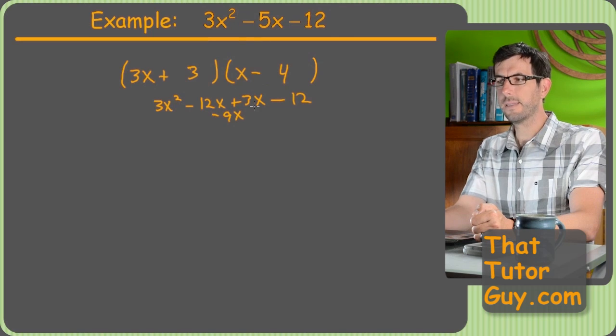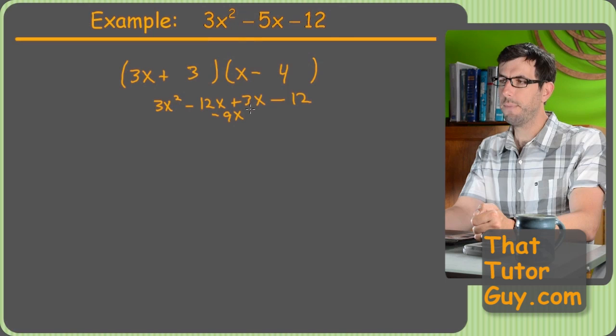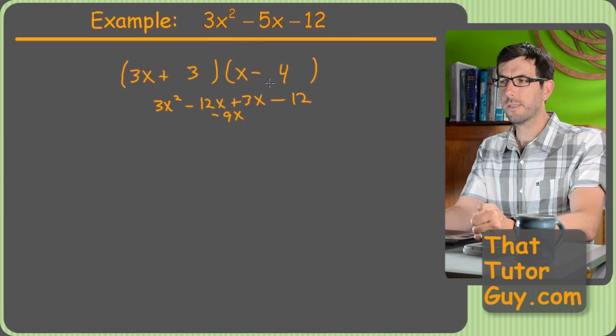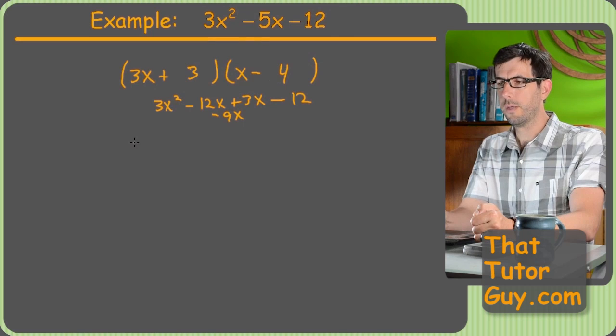Huh. I missed it by a little bit, but I'm in the ballpark. So what I'm going to do is just try switching the 3 and the 4. Maybe that'll work. So we'll do 3x plus 4, and then x minus 3. A subtle change, but it might make a difference.